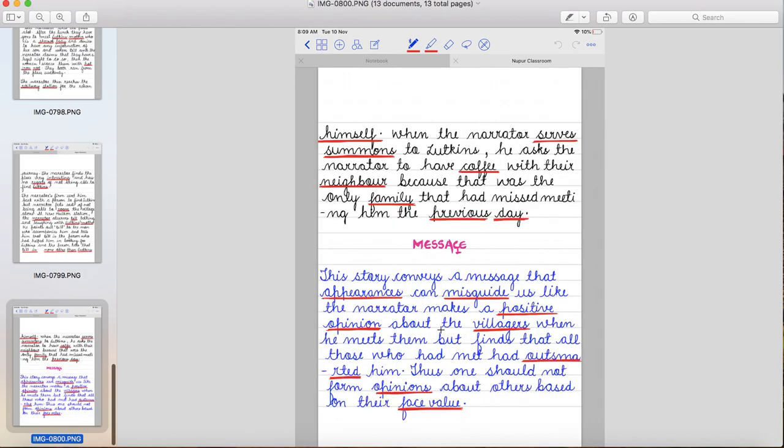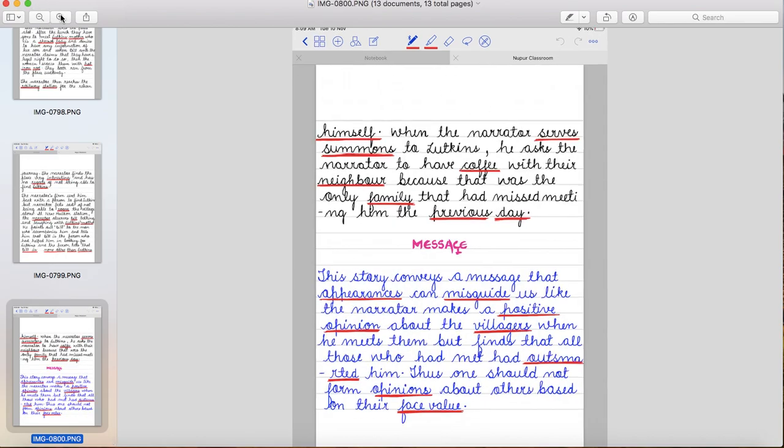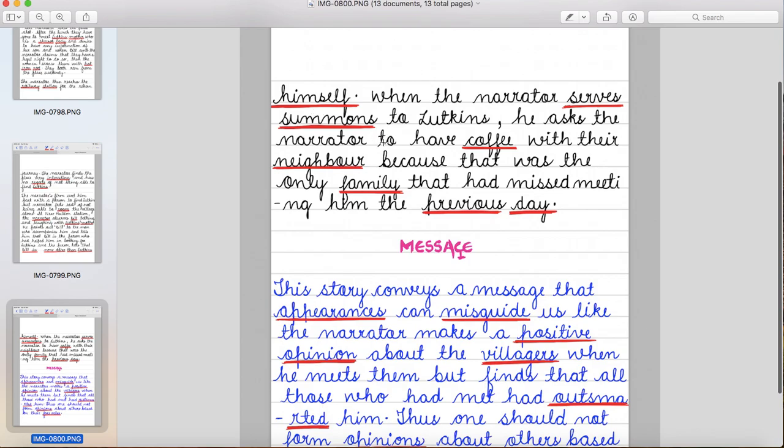When the narrator serves summons to Lutkins, he asks the narrator to have coffee with their neighbor. Jaise hi narrator court ka order Lutkins ko deta hai, toh Lutkins kya bolta hai? To have a coffee with their neighbor, ab aao meri neighbor ke saath hi coffee lelo because that was the only family that had missed meeting him the previous day. Because ye vahhi family hai, vahhi ek family hai, jinhone tumse nahin mila ek din pehle jab tum aaye thay. So this is how Lutkins makes fun of the narrator.